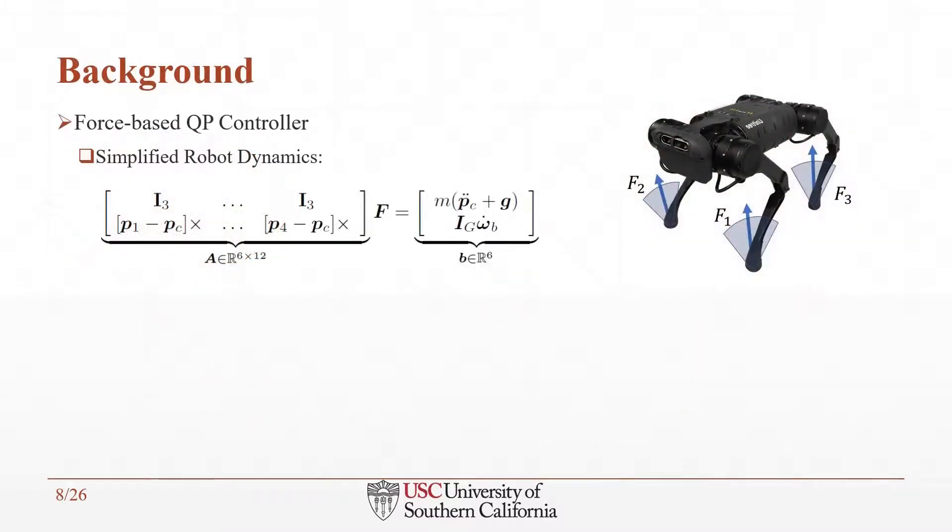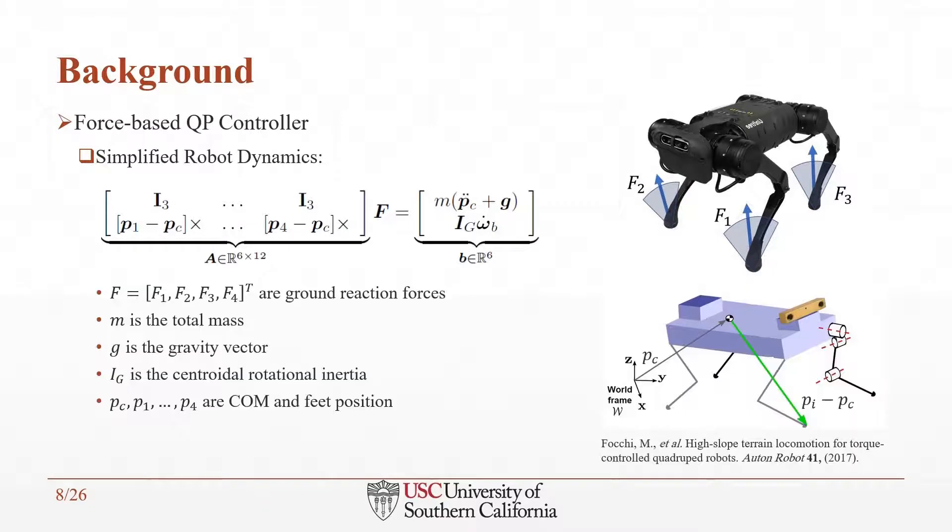In order to get through our method, first let's look at some background in the QP controller and L1 adaptive control system. As you can see in the picture, there are four forces exerted from the ground to each leg of the robot. We can describe the simplified robot dynamics as follows, where F indicates the force vector, M is the total mass of the robot, Ig is the inertia around center of mass, and Pc is the position of the center of mass in the world frame, which is shown in the diagram, and also P1 to P4 represent the position of each foot.